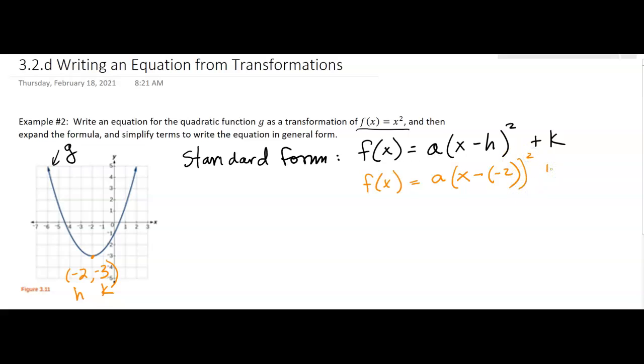Squared plus, well it's plus a negative 3, but I'll write it better here in a sec. So a, x plus 2 squared minus 3. And that's what f(x) is equaling.